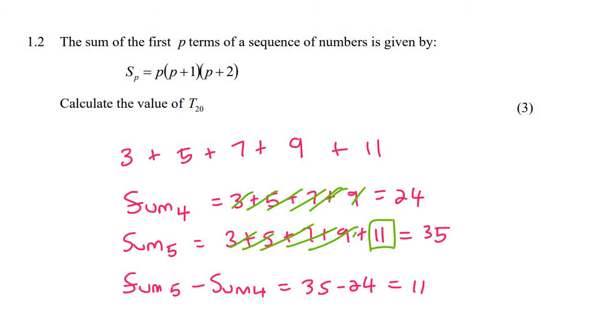So what I'm trying to show you - and 11 is term 5 - is that if you want to find term 5, you can say sum of the first 5 minus the sum of the first 4 and that'll give you term 5.